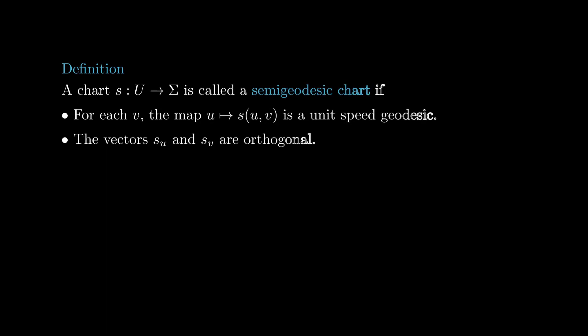The Gauss Lemma motivates the following definition. We say that a parameterization s is a semi-geodesic chart if for each fixed v, the map that sends u to s u v is a unit speed geodesic, and at each point, the vectors s u and s v are perpendicular. Because of the Gauss Lemma, we know that there are plenty of semi-geodesic charts. It is then not hard to check that any point in a surface can be covered by a semi-geodesic chart. Note that this is not trivial from the Gauss Lemma, as ironically, a semi-geodesic chart around p does not cover p. To solve this exercise, one needs to find a point q near p such that p is covered by the semi-geodesic chart around q.